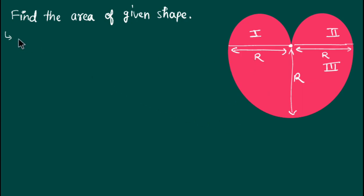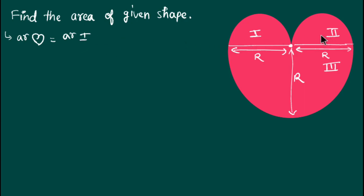Now we have to find the area of the shape — this is like a heart shape. The area of the shape equals the area of the first part plus the area of the second part plus the area of the third part.